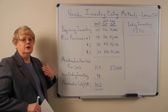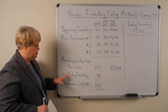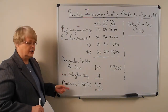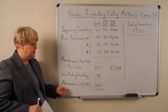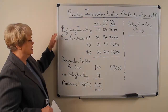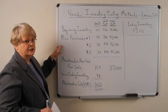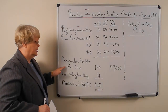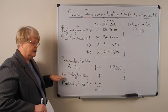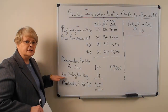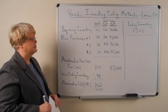If you are testing your perpetual system, you can switch these around because you're probably going to know what your cost of merchandise sold is. So you can say beginning inventory plus purchases equals merchandise available for sale, less cost of merchandise sold equals ending inventory. You can flip it around like that.